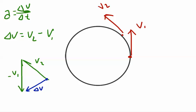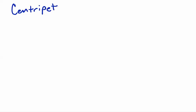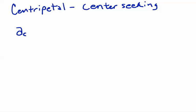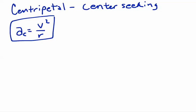You will notice that the delta v vector is pointed towards the center of the circle. So we can conclude that the acceleration direction for an object undergoing uniform circular motion is directed towards the center. There is a simple formula that describes this acceleration, which we refer to as centripetal — a big fancy word for center-seeking, or towards the center. The centripetal acceleration, written as a with a subscript c, is equal to v squared over r, where v is the magnitude of the velocity, or in other words, the speed.